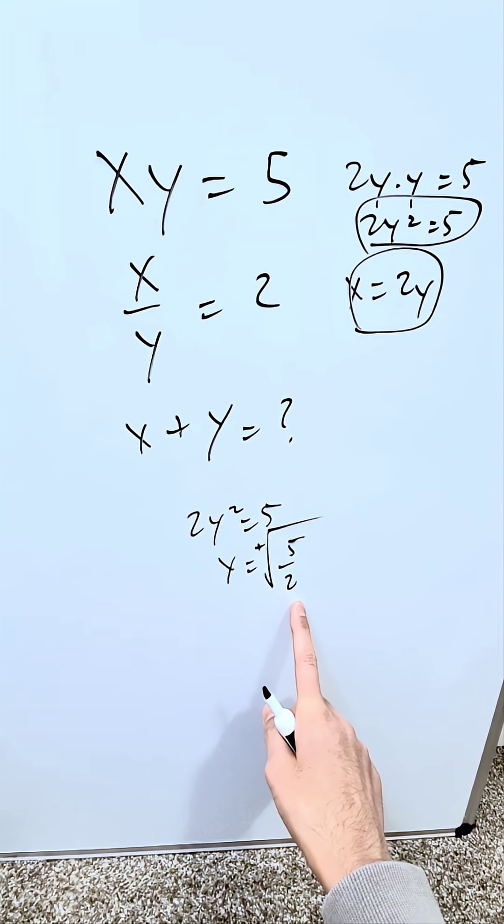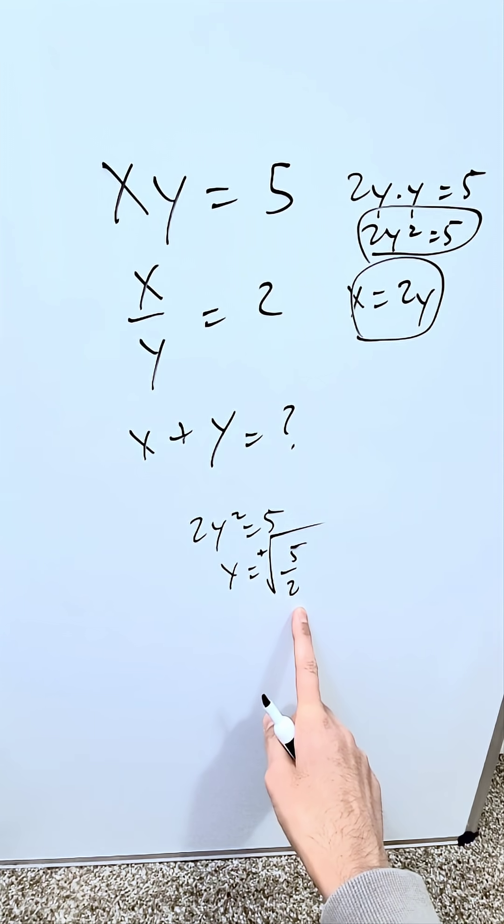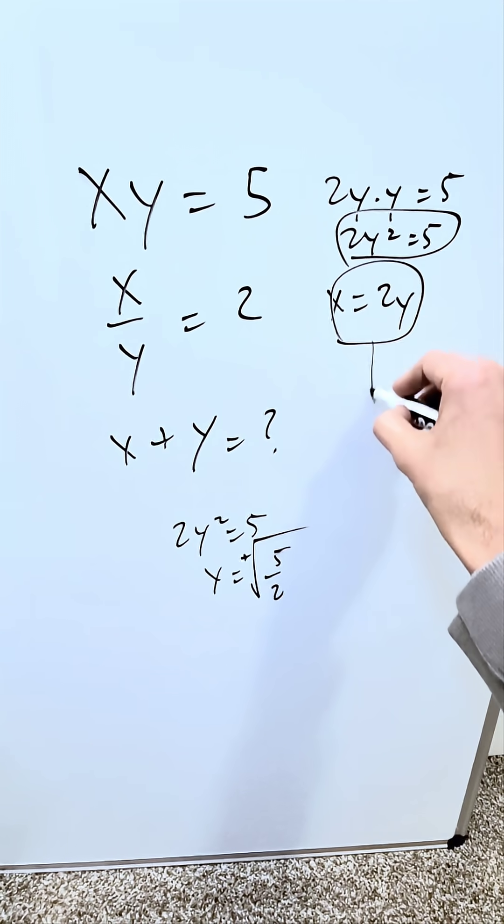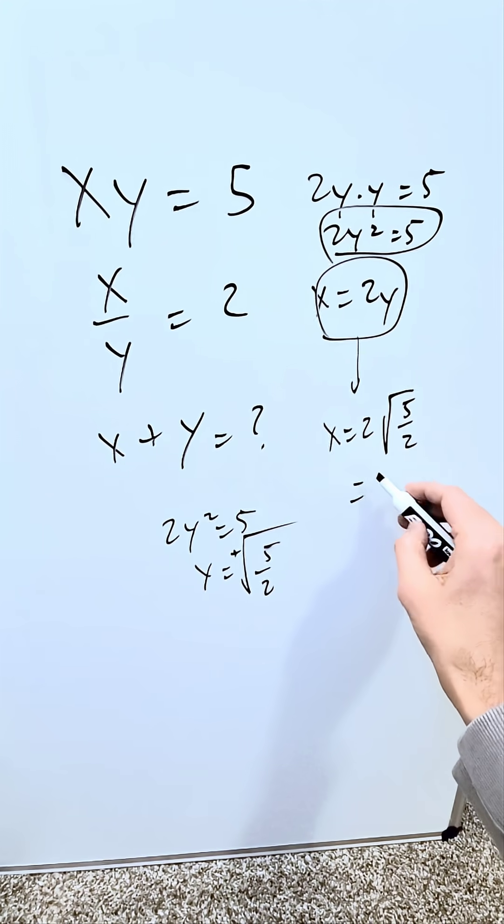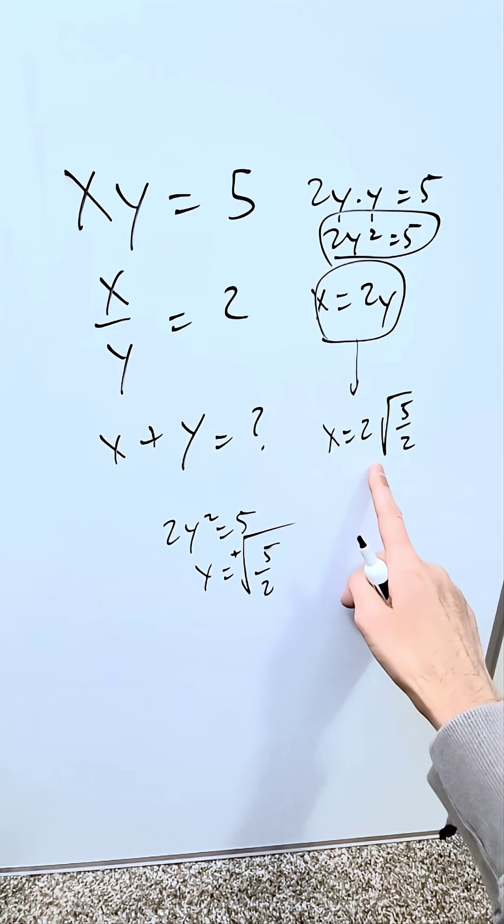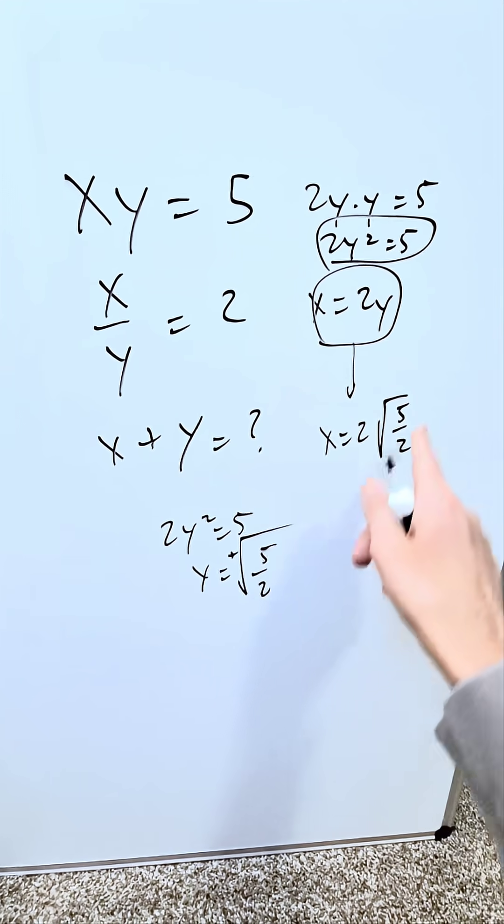I will take this item substituted back to determine the value of x. Look right in this equation. x here is equal to 2 times the value of y, which is the square root of 5 over 2. We know that to be the case. It's just equal to twice the value of y.